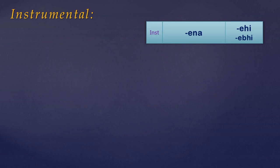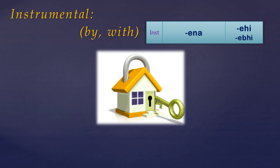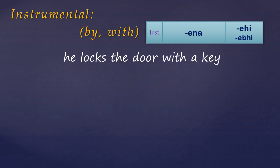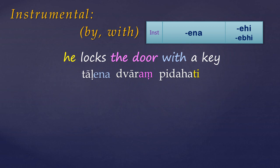Concentrating now on the instrumental case: this case largely overlaps in meaning with the English prepositions 'by' or 'with', and is used to indicate the means by which something is done. We'll see more uses of the instrumental case in the next lesson, but for now we'll just stick with this simple definition. The general order of a Pali sentence is to have the verb at the end and the subject first, along with things which belong to the subject — in this case, the instrumental — followed by the accusative object.